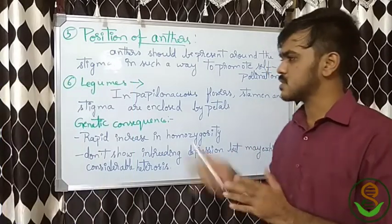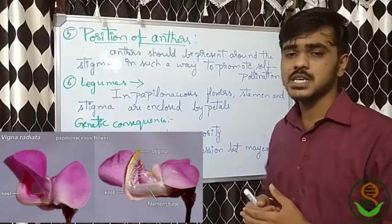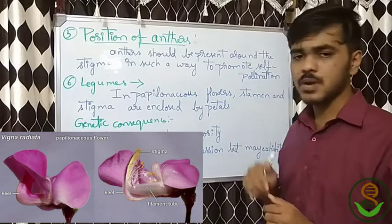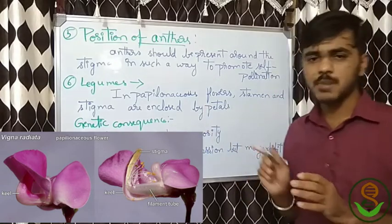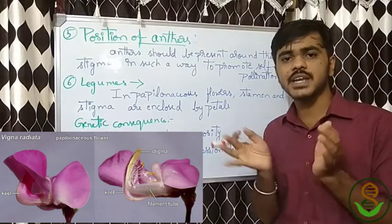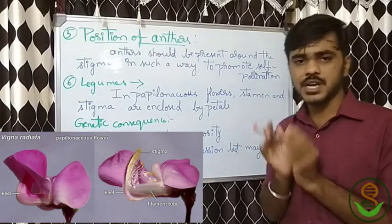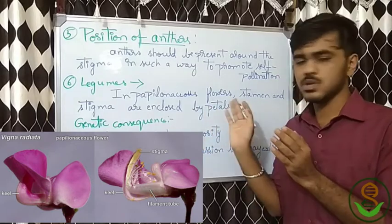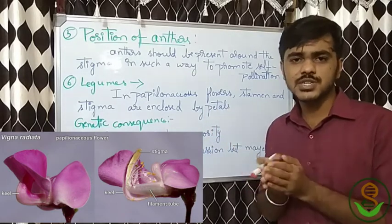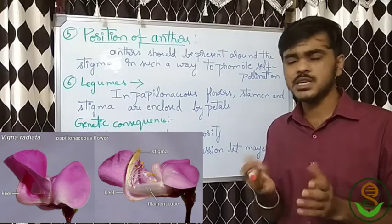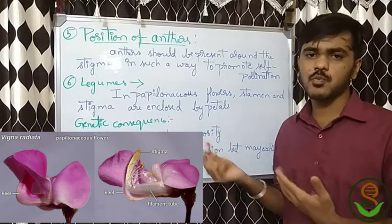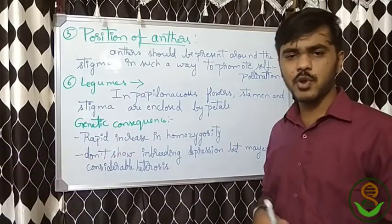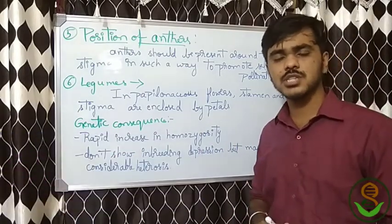Next, in leguminous plants — the papilionaceous flower — what happens is the stamens and stigma are enclosed within the petals. These petals enclose them and do not allow the stamens and stigma to open, so there is no transfer of pollen from another plant, which promotes self-pollination. Examples include black gram and green gram. These are the important mechanisms that promote self-pollination.